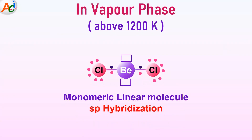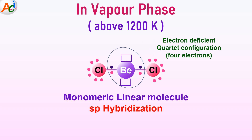Above 1200 K, in the vapor phase, the beryllium chloride molecule exists as a linear monomeric structure with a bond angle of 180 degrees. The central beryllium atom exhibits SP hybridization. Despite this, the beryllium atom is electron-deficient, possessing only four electrons in its outermost shell. To attain stability, it tries to achieve an octet configuration by accepting electron pairs into its empty orbitals. It is noteworthy that beryllium contributes two electrons for bond formation, while the remaining two electrons are contributed by the chlorine atoms.